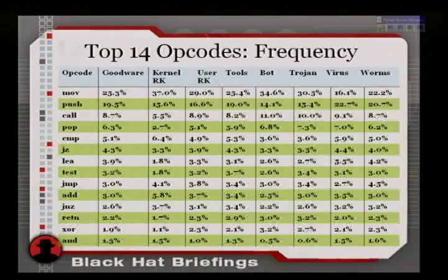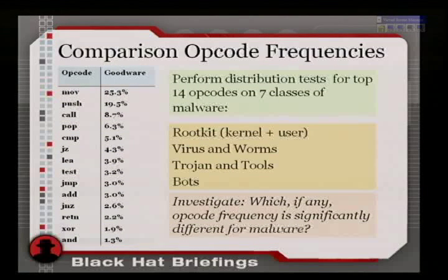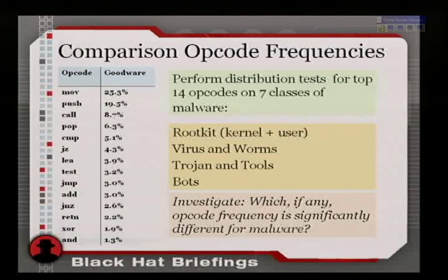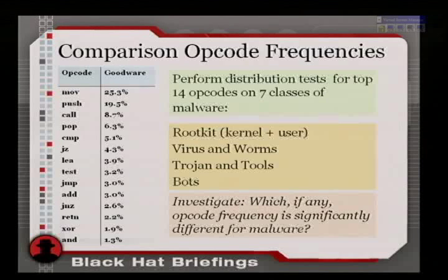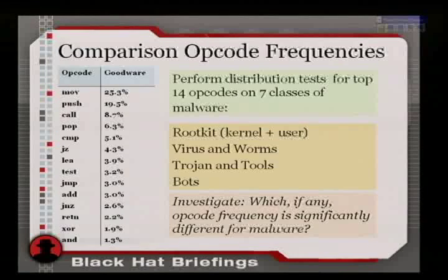I'd like to see whether I can run some tests and answer a simple question: given this opcode frequency distribution, is there any significant difference for malware in this distribution? I'm comparing the goodware and malware distributions, trying to figure out if there's something other than chance that could explain the discrepancies or similarities.